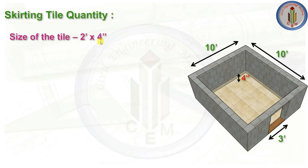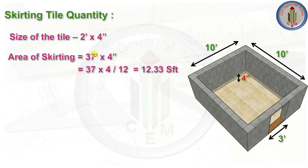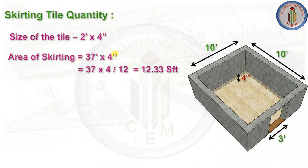The skirting tile size is 2 feet length by 4 inches height. To calculate the area, we first need the total length of skirting, which is 37 feet. This is derived as: three sides at 10 feet each = 30 feet, plus one side with a door opening leaving only 7 feet, giving 30 + 7 = 37 feet. The height is 4 inches, converted to feet as 4/12.